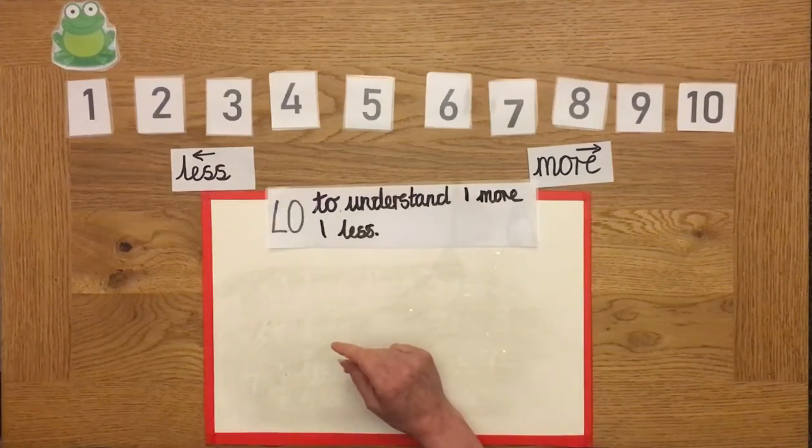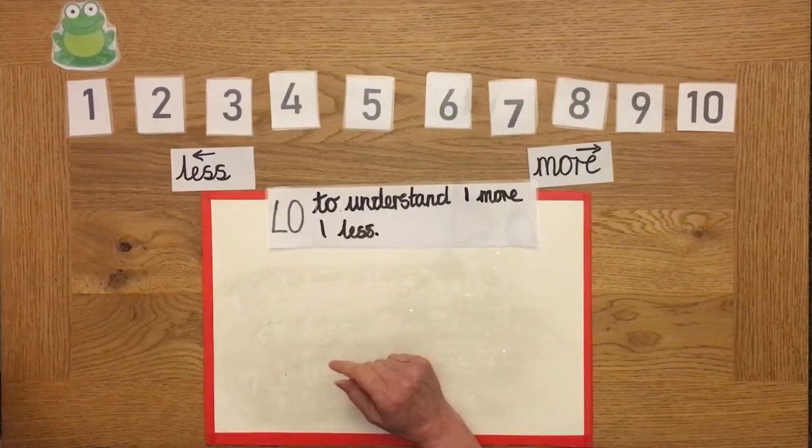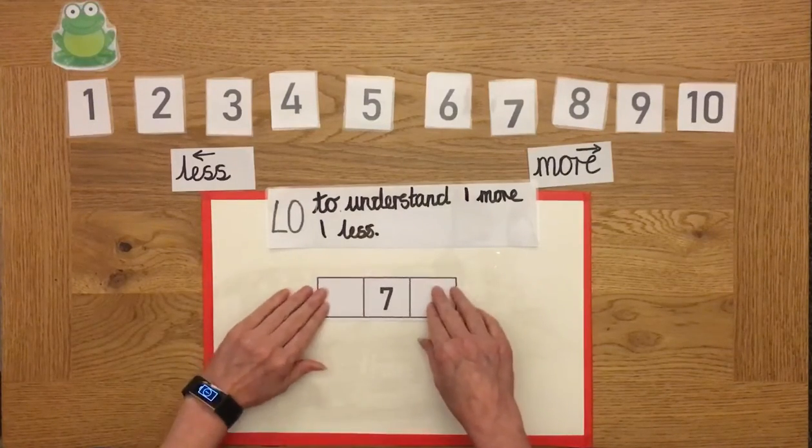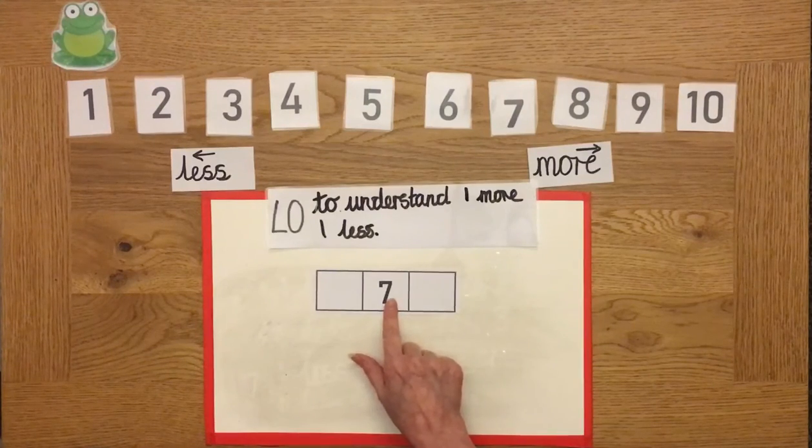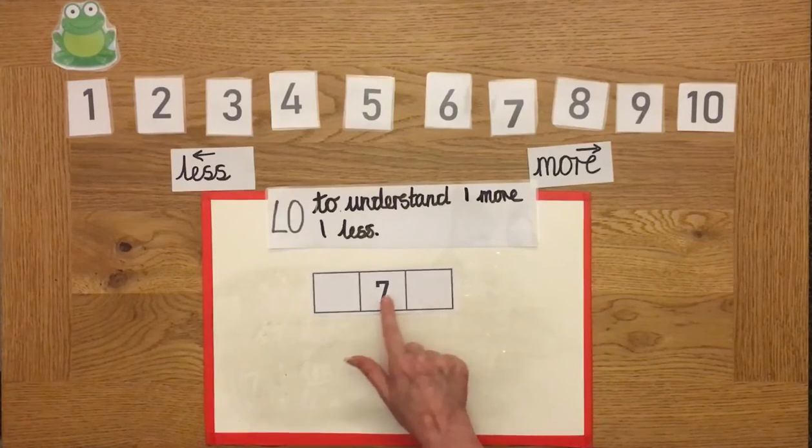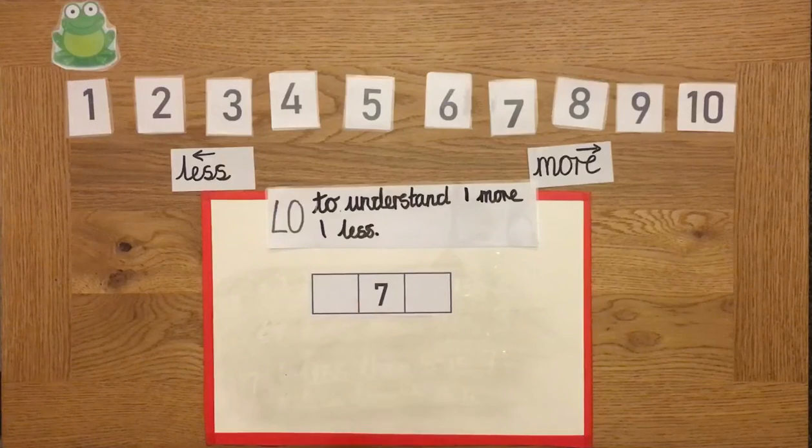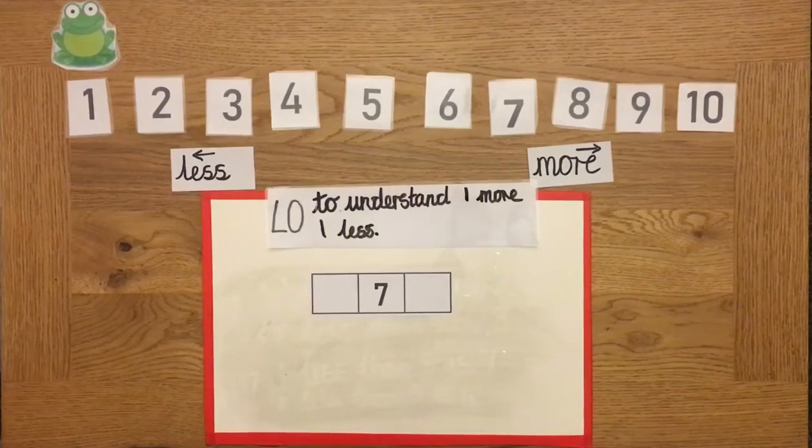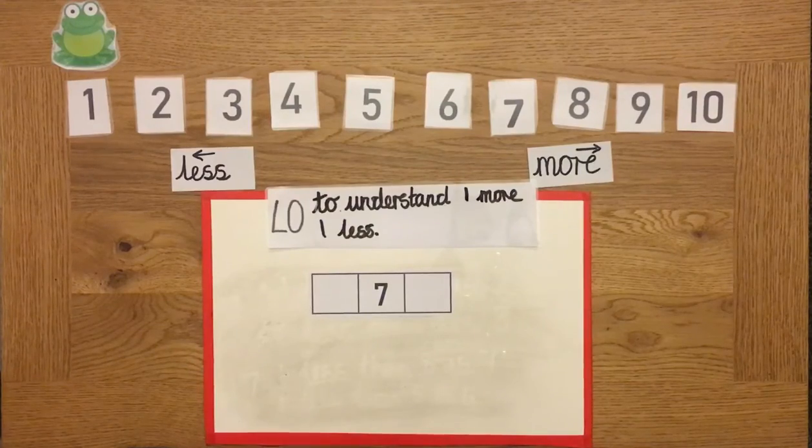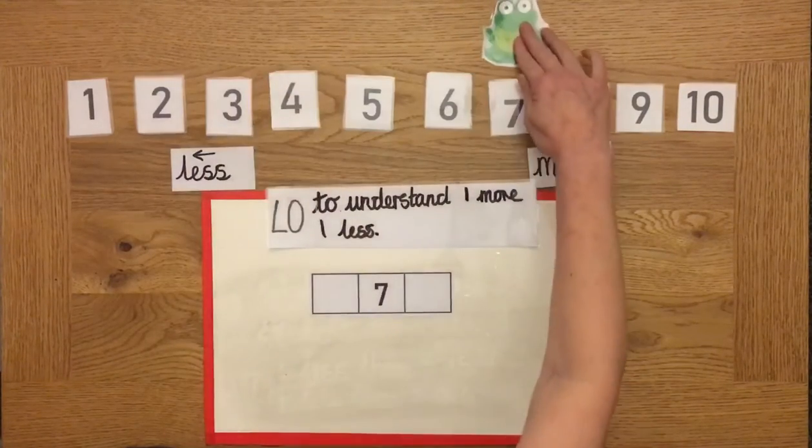This is where it's going to get tricky. We have an exercise where we're going to be looking for the one more and the one less. So let's have a look. What number do we need to start at? Fantastic. We need to start at number seven.